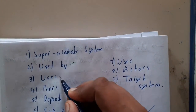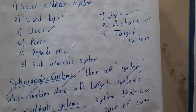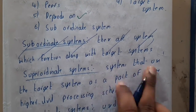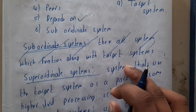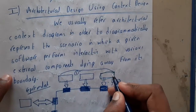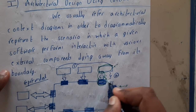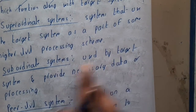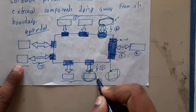You know what 'used by,' 'use,' 'depends on,' and 'use actors' mean, so let us go through some unknown things. Super-oriented systems are systems that use the target system as part of some high-level processing schema — we are using some other high-level system to generate output and transmit it. Sub-oriented or subordinate systems are used by the target system and provide necessary data for processing — they help in getting the output.